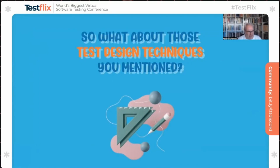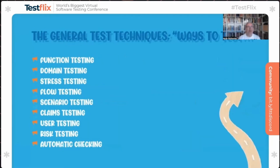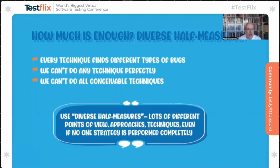But what about those test design techniques I mentioned — aren't they important? Of course they are. These are skills you'll use to design tests. But only when you have a risk analysis, a test strategy, and you're starting to execute exploratory testing or create scripts and scenarios — only then do test design skills become important. In Rapid Software Testing we talk about general test techniques, categorized as function testing, domain testing, and more. Use them all — every technique finds different types of bugs, and you can't do any technique perfectly, so use many approaches.